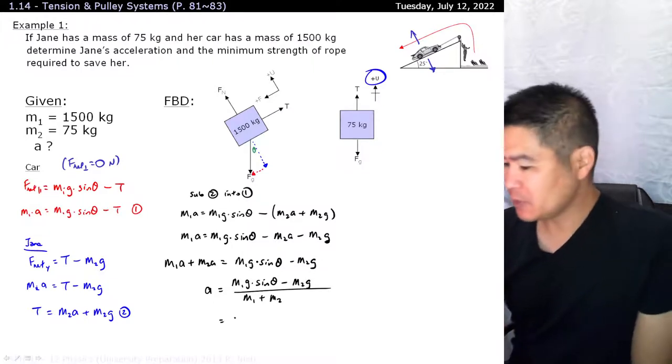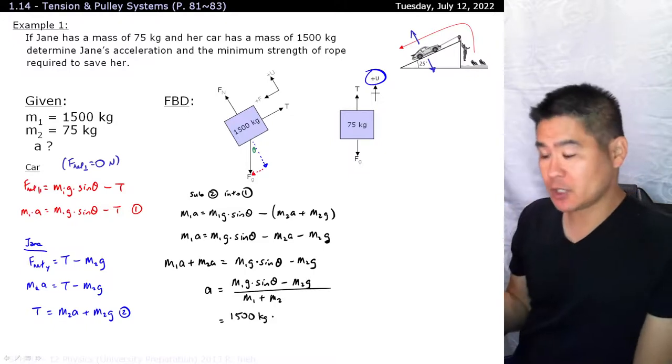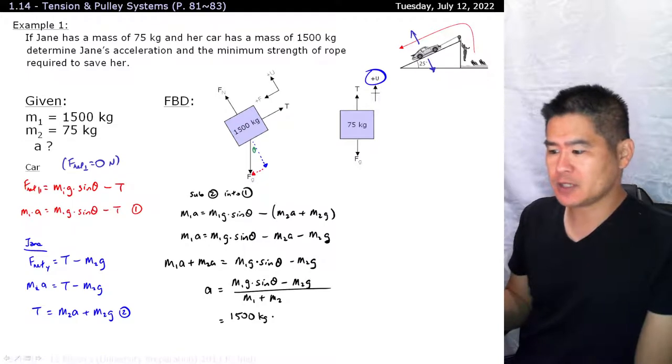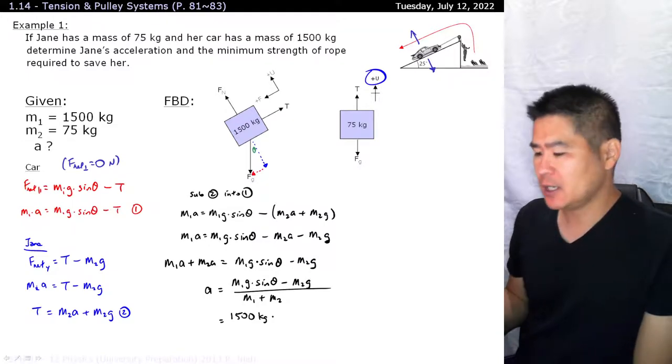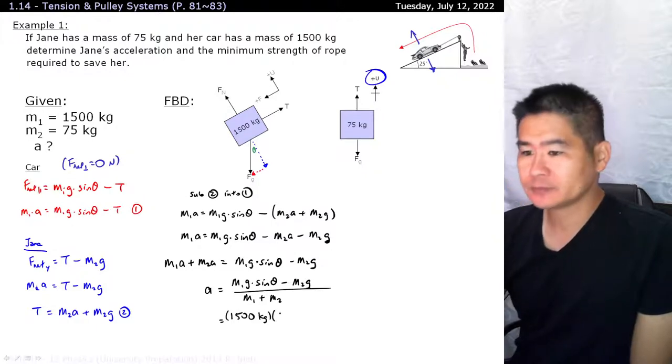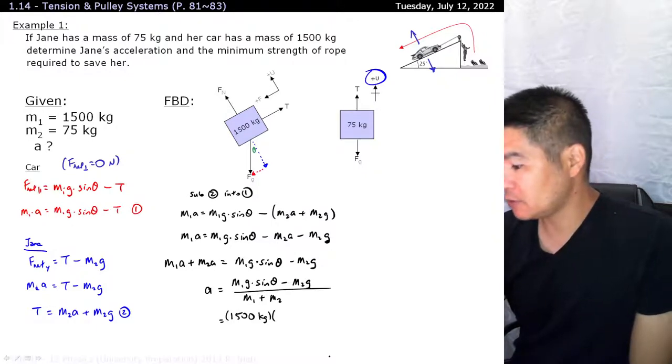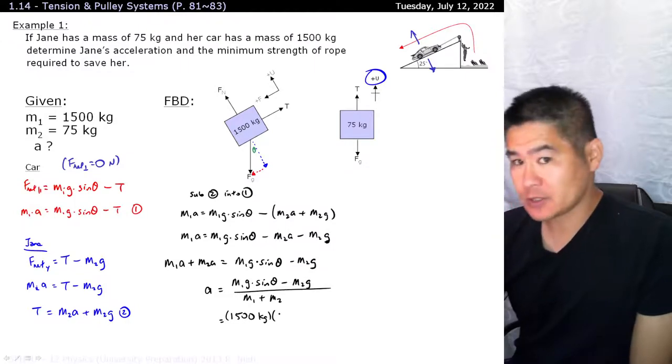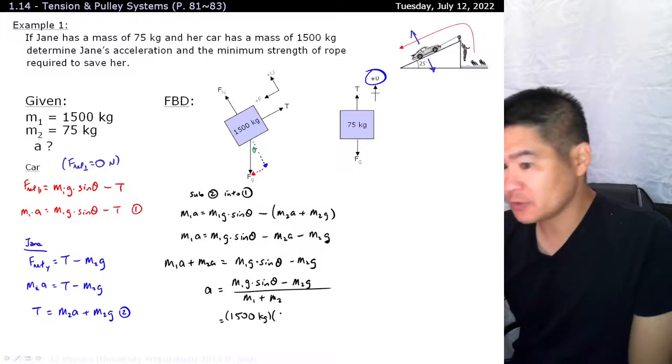So when we isolate for A, A is equal to M1G times sine of theta minus M2G divided by M1 plus M2. I like to save things for the end, mainly because we want to create a generalized equation often, and we're hoping that if terms or variables divide themselves out, that means that initially it didn't matter. In this case, nothing did disappear. So every single variable did matter, including gravity.